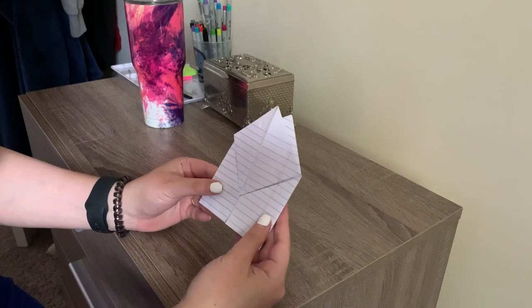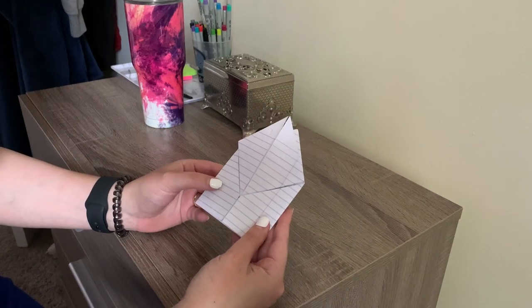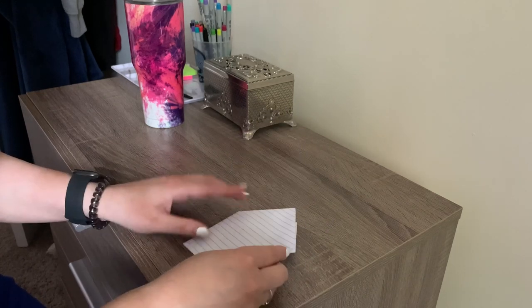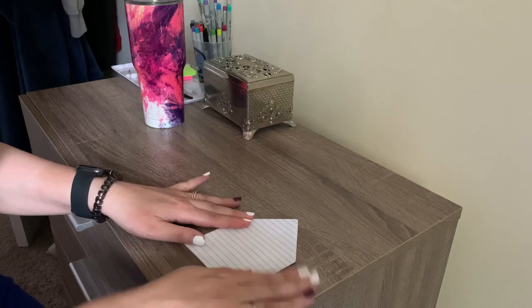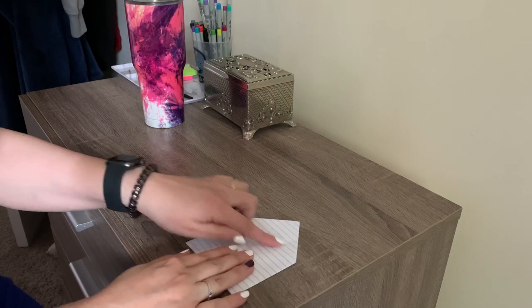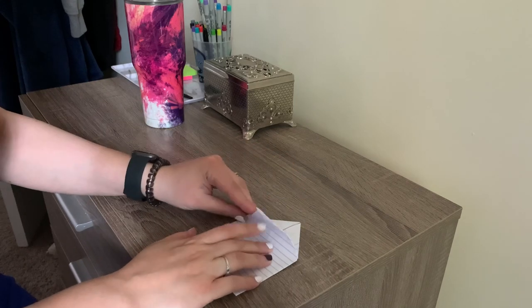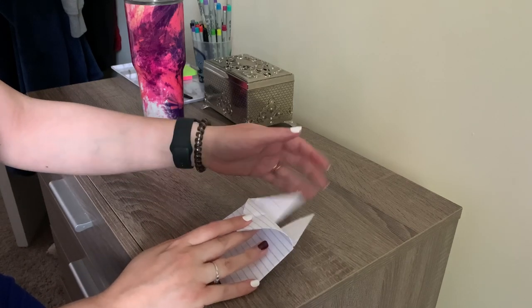And so far this is what it should look like on the front. Now we are going to turn it around and we are going to fold this top part that looks like a triangle back. Make sure to leave these two flaps free.